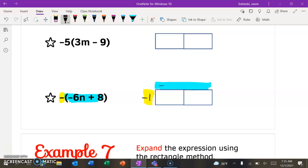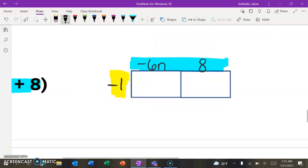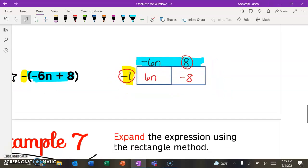And again, everything that's inside the parentheses is what goes on top of your rectangle. So this is going to be a negative 6n, don't lose that negative, plus a positive 8. All right. And let's expand by multiplying. So negative 1 times negative 6 will get you a positive 6, and don't lose your n. And then negative 1 times a positive 8 will give you a negative 8 for your answer. So your expanded form is what's inside the rectangle. So that is 6n minus 8. And we're good.